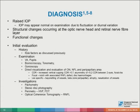The diagnosis of the patient can be made with a raised intraocular pressure, though it may appear normal on examination due to fluctuation or diurnal variation. Structural changes occur at the optic nerve head and retinal nerve fiber layer, and functional changes are also noted. Initial evaluation requires taking a history with risk factors as discussed, and doing a thorough examination checking visual acuity, pupils, biomicroscopy, tonometry, gonioscopy, and direct visualization and evaluation of the optic nerve head, nerve fiber layer, and peripapillary area.